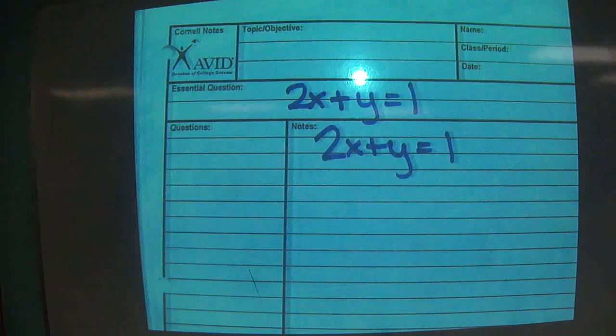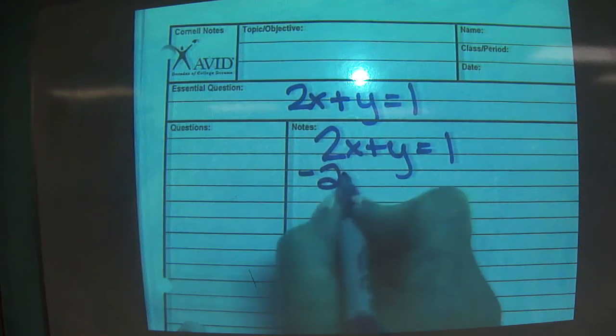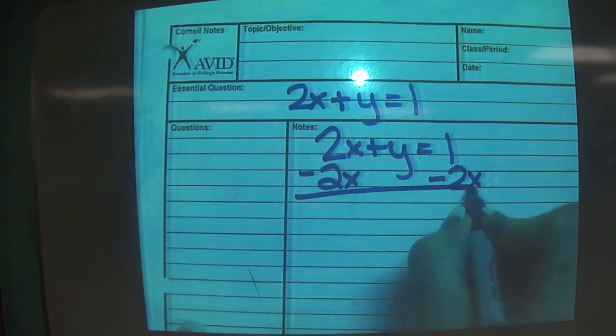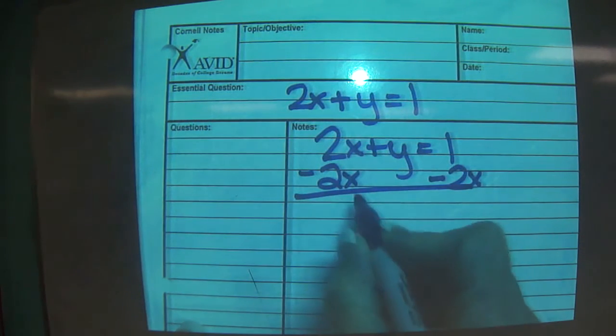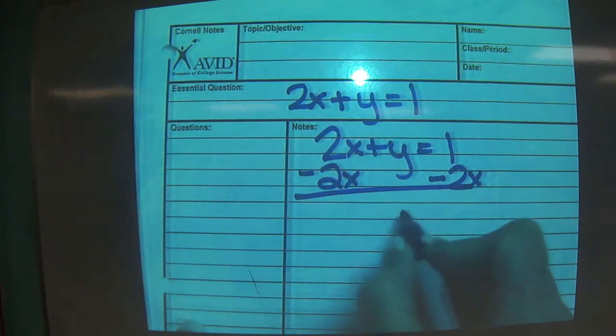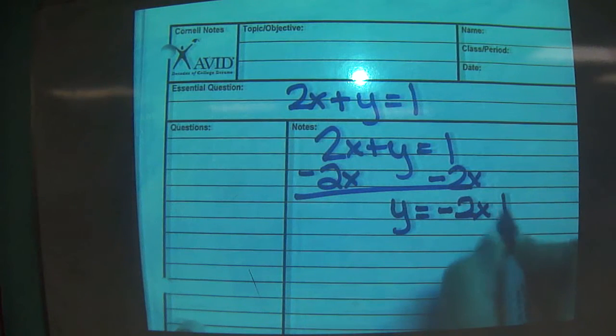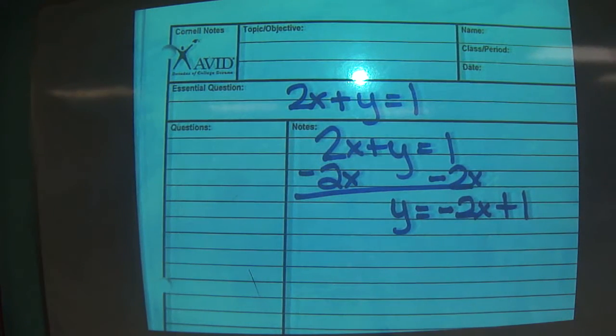We have to move it. And how do we move something from one side of the equation to the other? Add its opposite. So we're going to add negative 2x to each side. So 2x and negative 2x equals 0x. So y equals negative 2x plus 1. We have the slope-intercept form now, right?